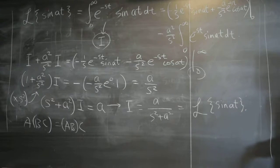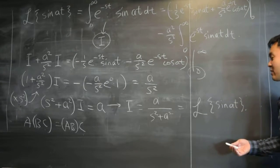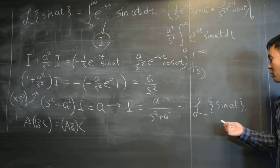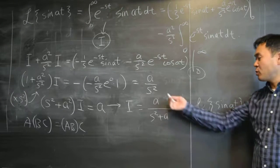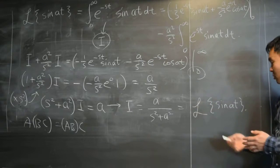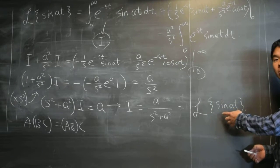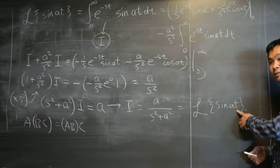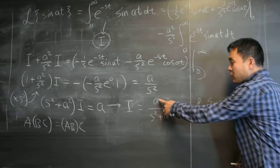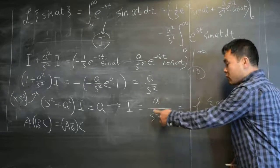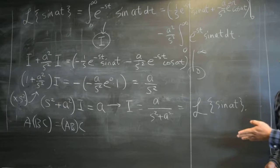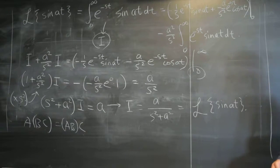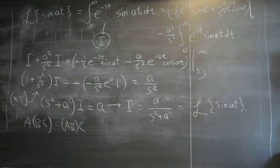Just regular sine t would just be s over 1 plus s squared? Right. That's a good question. So last time I claimed that Laplace transform of sine t is 1 over, but this contains that result, right. What is the Laplace transform of sine t according to this? Sine t is sine 1t. So a is 1. So if you plug in 1 here and 1 here, you get 1 over s squared plus 1, exactly as I said last time.